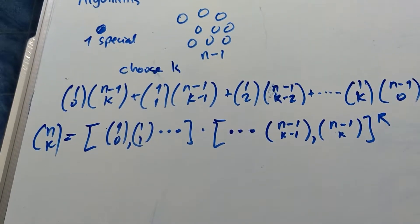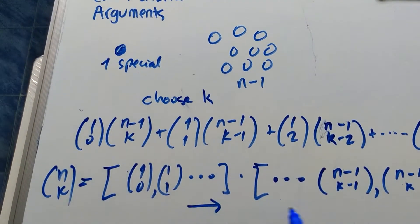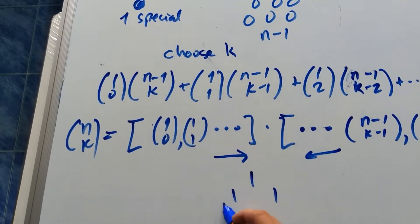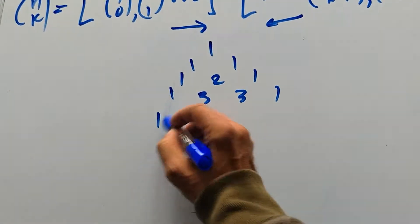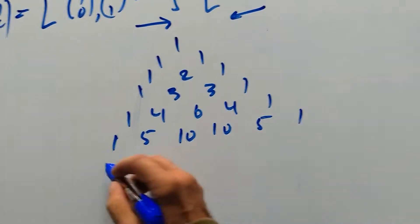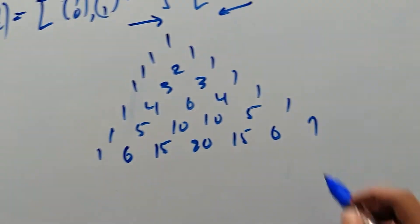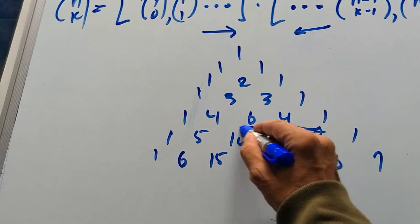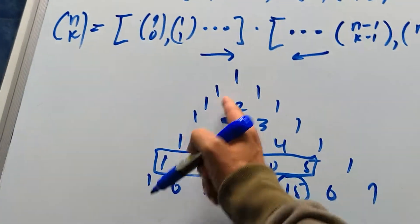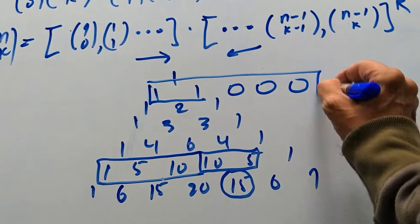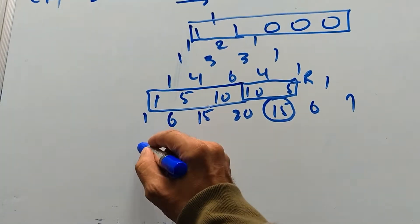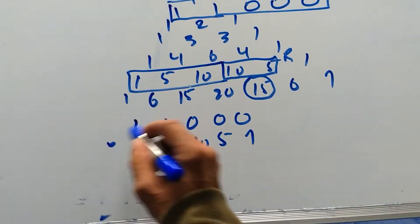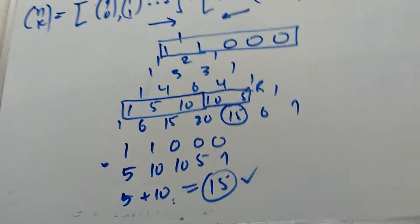If I extend one row in one direction, I have to extend the other row in the corresponding direction — the dots align. Let's try an example. Say we want to compute 6 choose 2. I'll extend the relevant row to the left by three elements and extend the other row to the right by three elements, remembering to reverse. I get 1, 1, 0, 0, 0 dot product with 5, 10, 10, 5, 1 reversed, giving 5 plus 10, which is 15. That's correct — amazing.